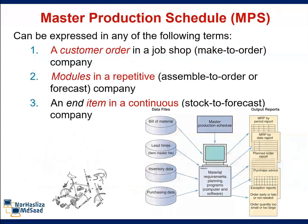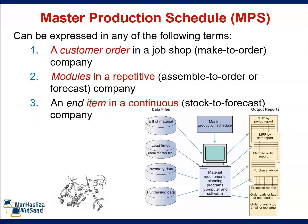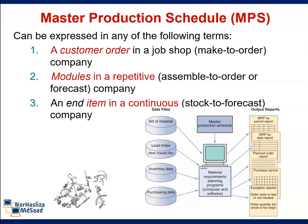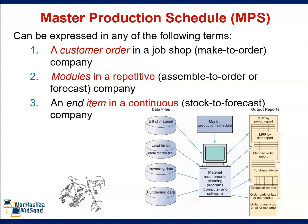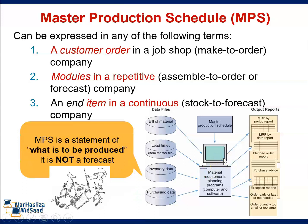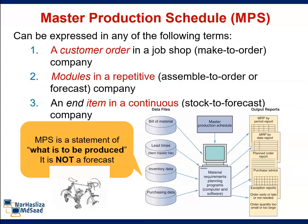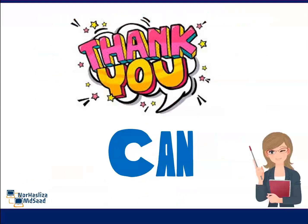The Master Production Schedule can be expressed in any of the following terms: a customer order in a job shop company, models in a repetitive company, and an item in a continuous company. MPS is a statement of what is to be produced — it is not a forecast. That's all.